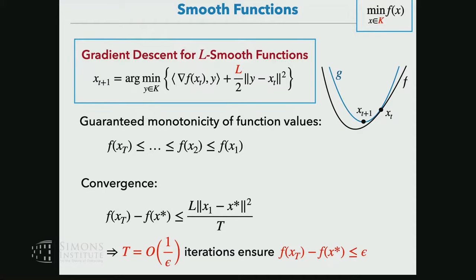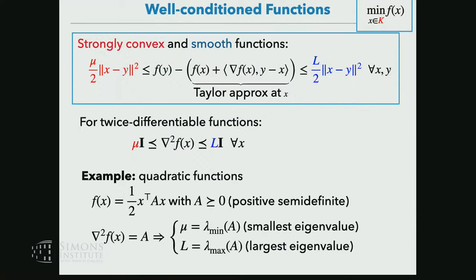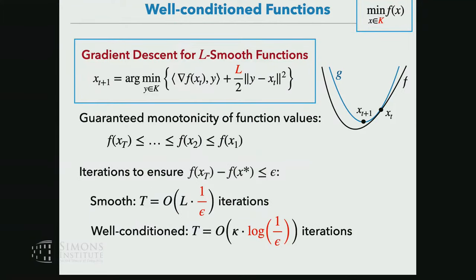To clarify the convergence guarantee for smooth gradient descent: the constant here is even better than shown — it's one-half in the denominator. The full expression is actually L times the initial distance squared divided by ε. We set that expression equal to ε and solve for T to get the iteration count. For well-conditioned functions, we use the same step size as in the smooth case — gradient descent scheme is the same, but we get much faster convergence because of the strong convexity.